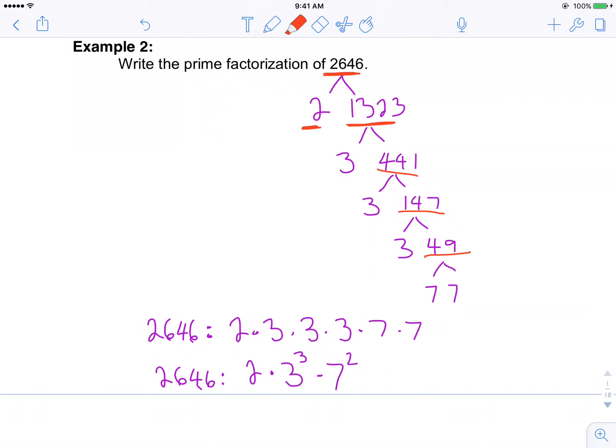So now I have my list of prime factors: 2, 3, 3, 3, 7, and 7.